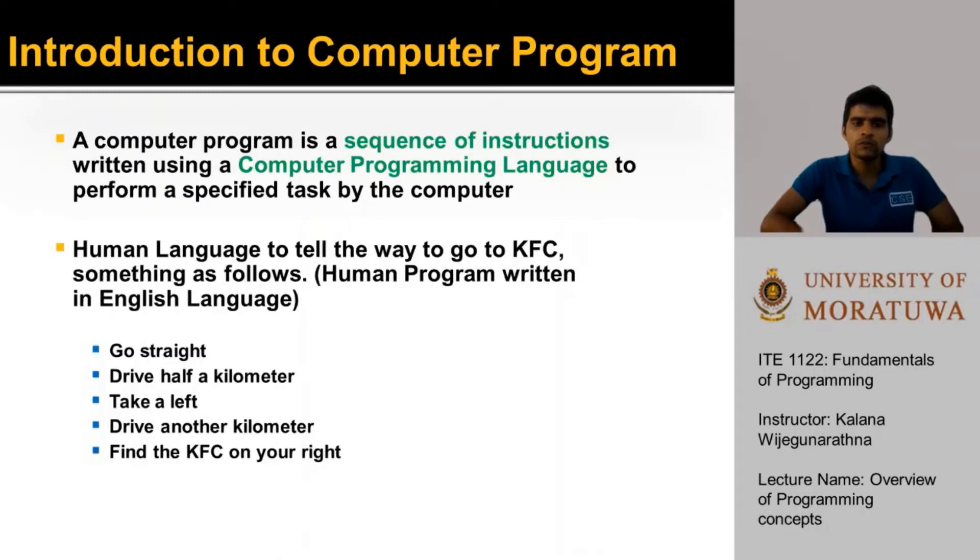So, what exactly is a computer program? It is a sequence of instructions written using a computer programming language to perform a specified task by the computer. The two important terms to notice here are sequence of instructions and computer programming language.